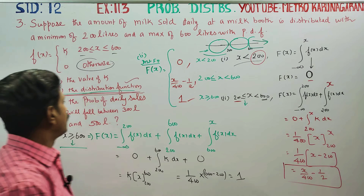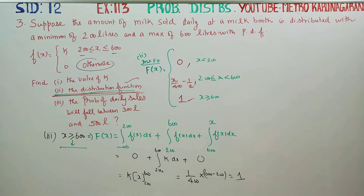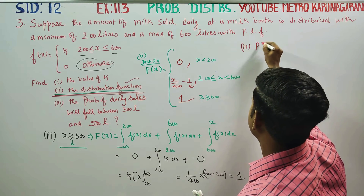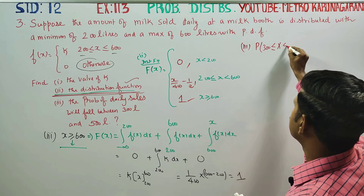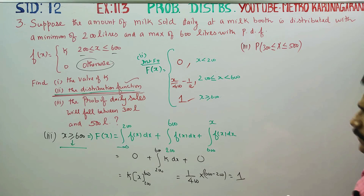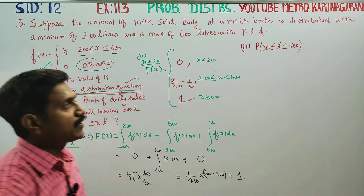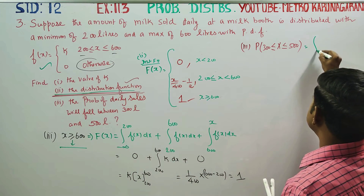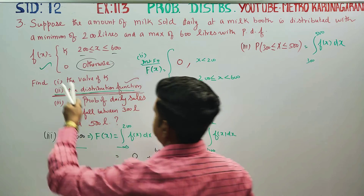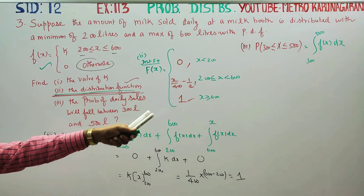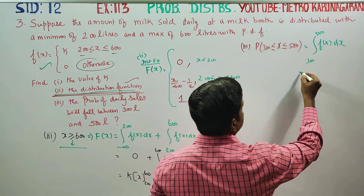The third part of the sum: probability of daily sales between 300 litres and 500 litres. We need the probability of 300 less than or equal to X less than or equal to 500. Using integration: integral from 300 to 500 of f(x) dx, which equals integral from 300 to 500 of k dx.